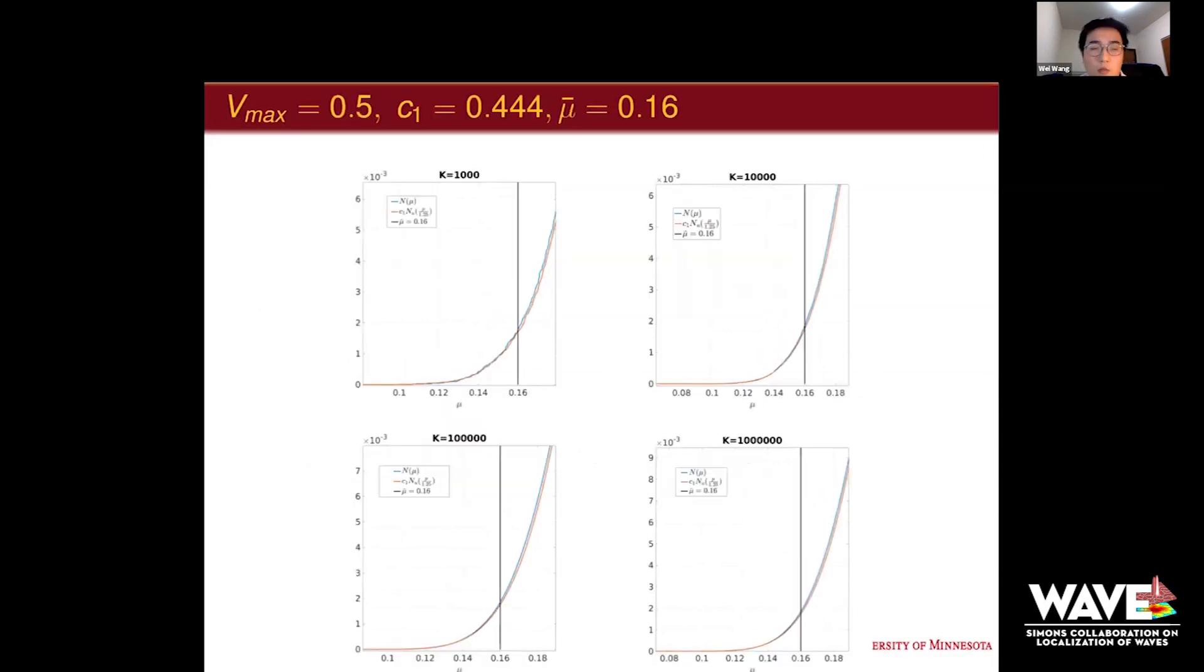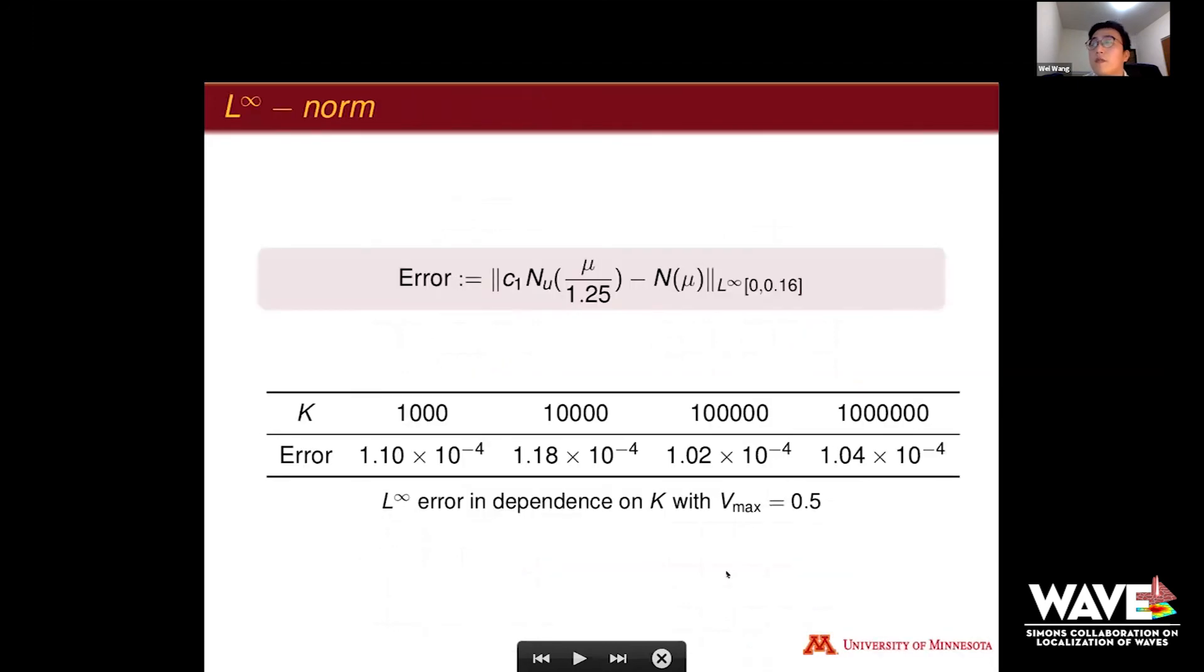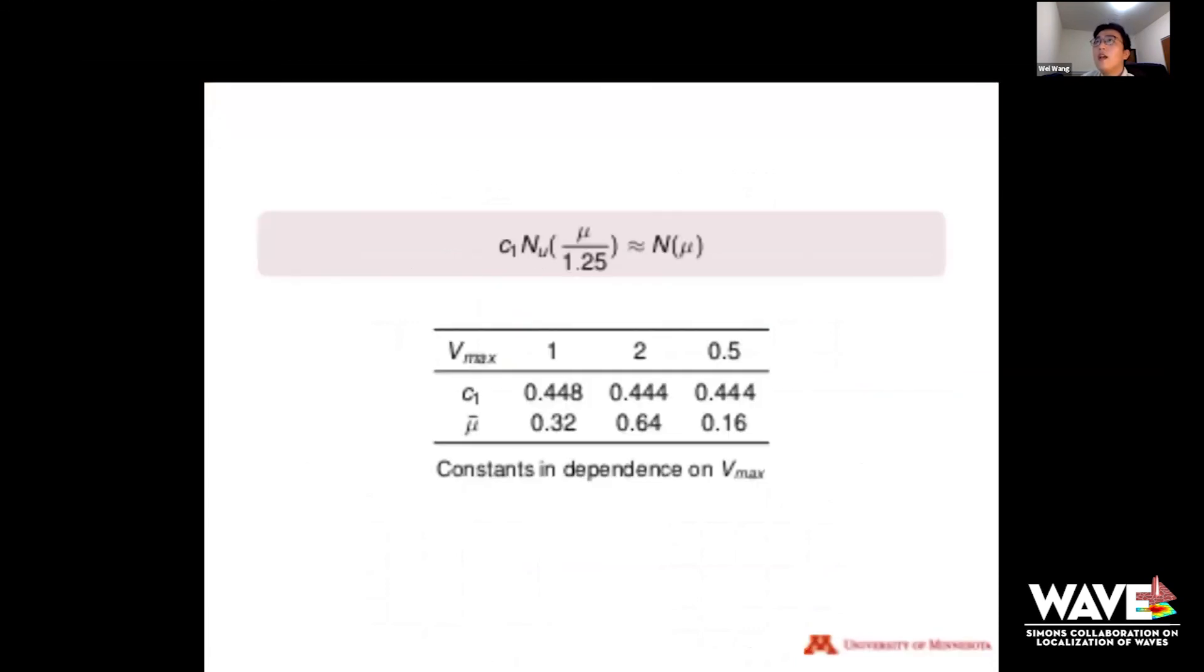Finally, we try a smaller V_max of 0.5. Everything came the same, except the vertical line where we choose μ_bar at 0.16. The scaling constant is 0.444, which we used the same as for the V_max two case. We found that on the left, it's matching well, and on the right there's some little difference. We give the infinity norms also. It's in the same level, tending to 10^-4 for different matrix size k.